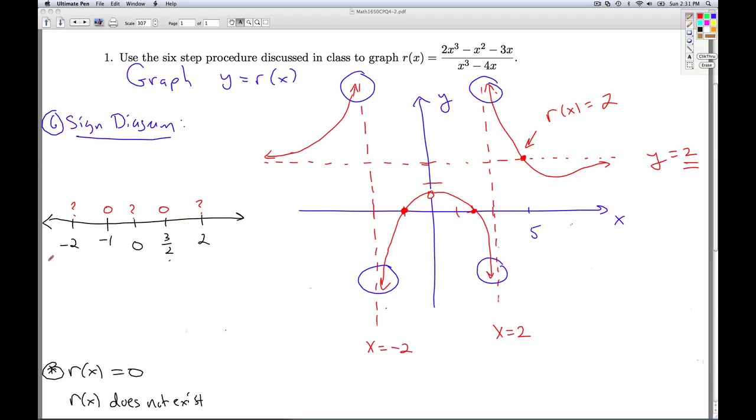And then just like any other sign diagram, I start picking points. So I pick a number in this interval, say negative three. I pick a number in there, say negative one point five. I pick a number there, say negative point five. I pick a number there, say one. I pick a number here, say one point seven five. And I pick a number here, say three. And I take each of these numbers and plug them into r of x, and all I care about is if it's positive or negative.